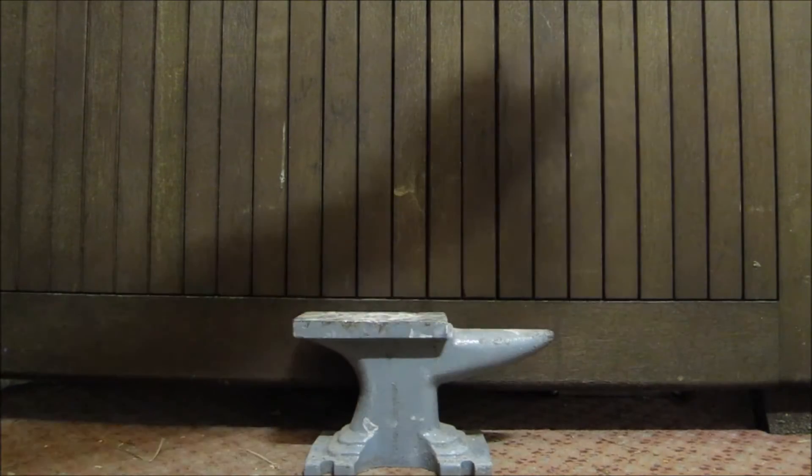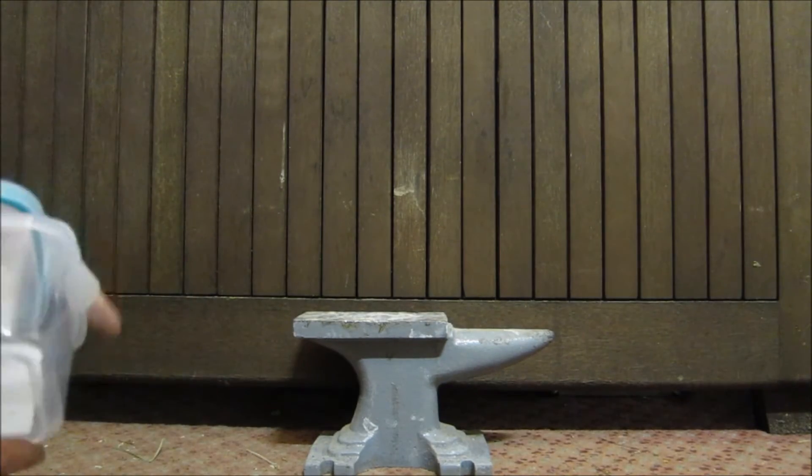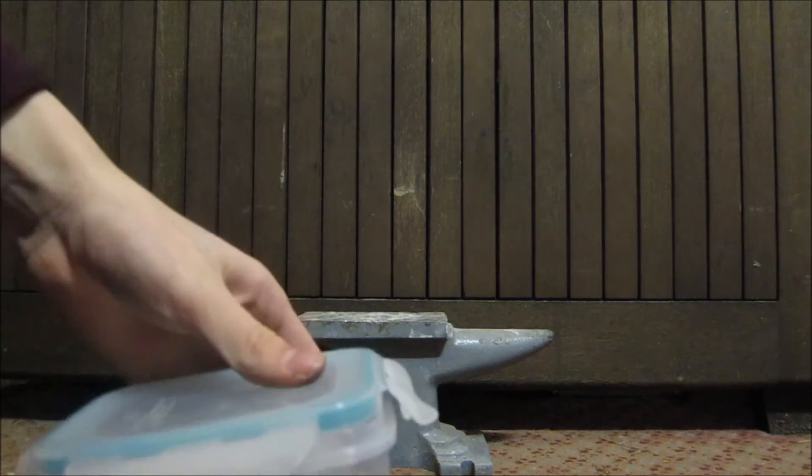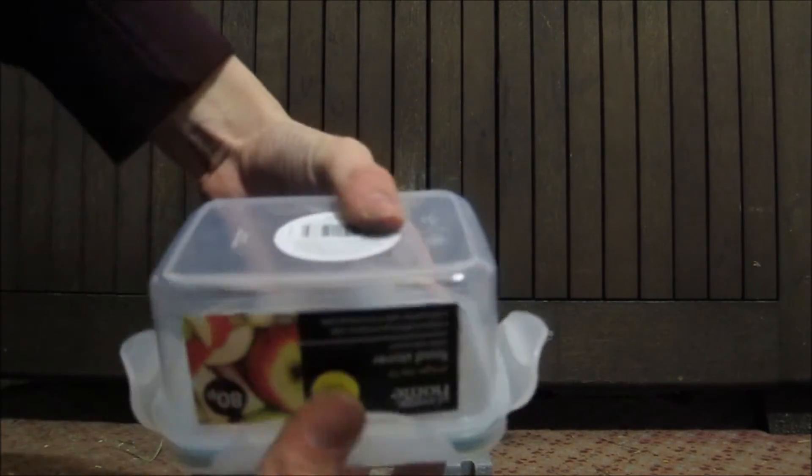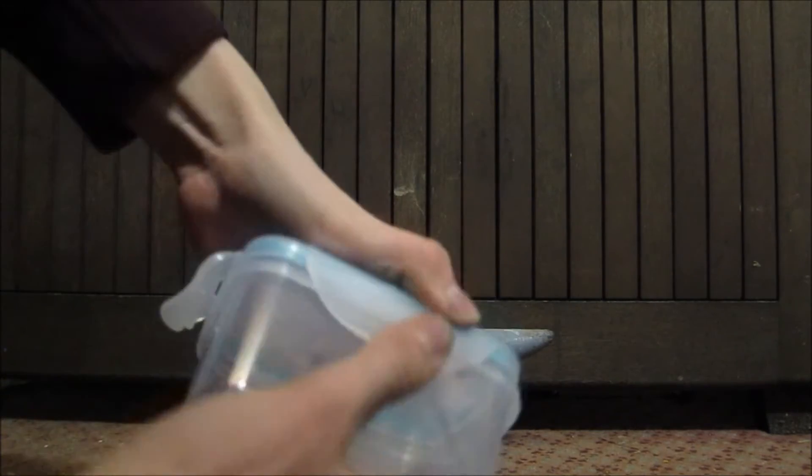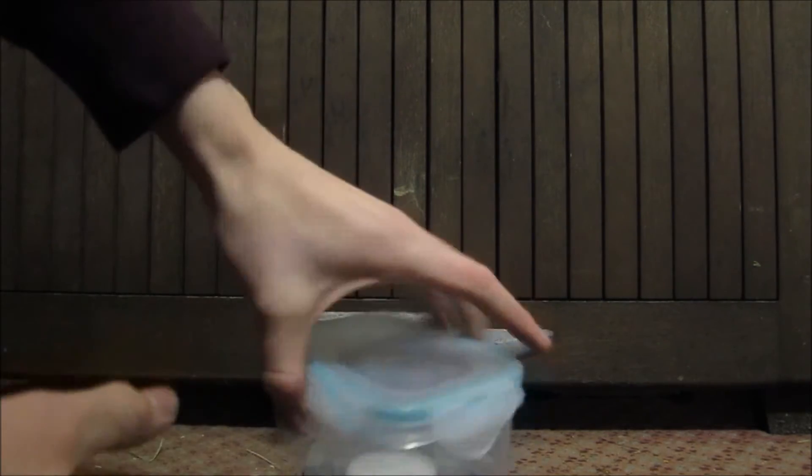First of all is a Tupperware box. It's fairly simple but you definitely want one with one of these fancy sealing lids, because you want it to be fairly airtight and you want it to be able to close down around the side. But you can get these fairly cheaply.